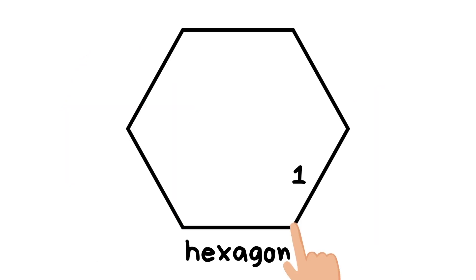Let's draw a hexagon together in the air. We need to draw six sides so follow me with your finger. One, two, three, four, five, six. This is a hexagon. It has six sides.